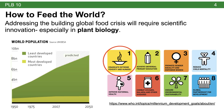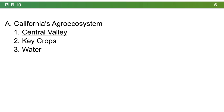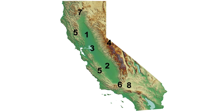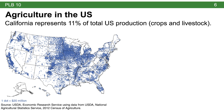In order to start talking about California's agro ecosystem, we need to first get a sense of its geography. We'll start with the Central Valley. California represents 11% of total US production, both in crops and livestock. Looking at this map of our country, each dot represents about $20 million in agricultural business, and you can see that in California, we have a great density of dots in most areas of the state.